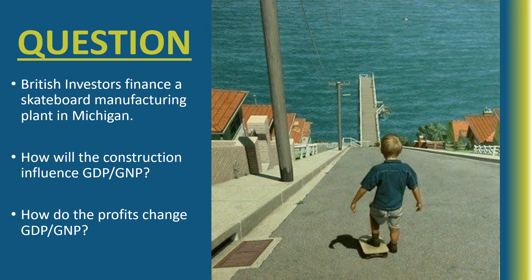To see the difference between GNP and GDP, here is a question from the Gortney textbook: British investors finance a skateboard manufacturing plant in Michigan. How will the construction influence GDP, and how will it influence GNP? And how do the profits change GDP, and how do the profits change GNP? Pause the video and see if you can come up with the answer.